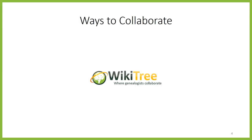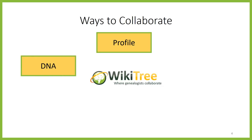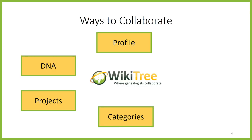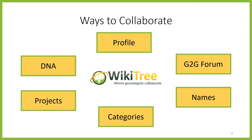WikiTree is all about collaboration, and there are multiple ways this can be done. We can work together on common profiles, connect with possible DNA matches, work on projects — a project is a group of members organized around a topic or volunteer activity — group profiles into categories such as a place or an event, connect with people researching the same names, and ask or answer questions in the Genealogists to Genealogists forum, also called G2G.